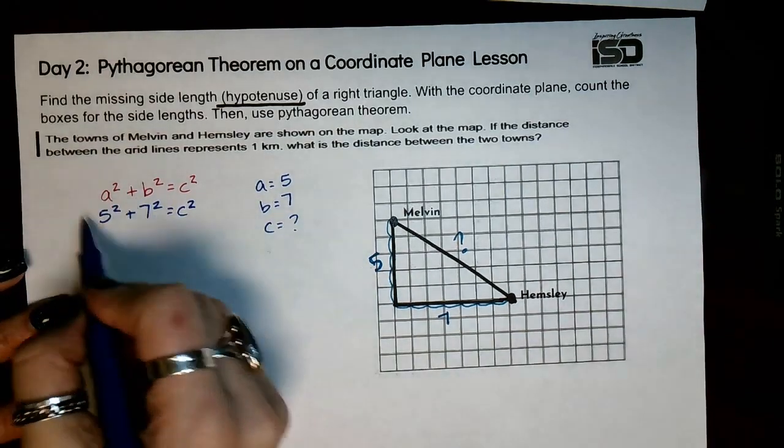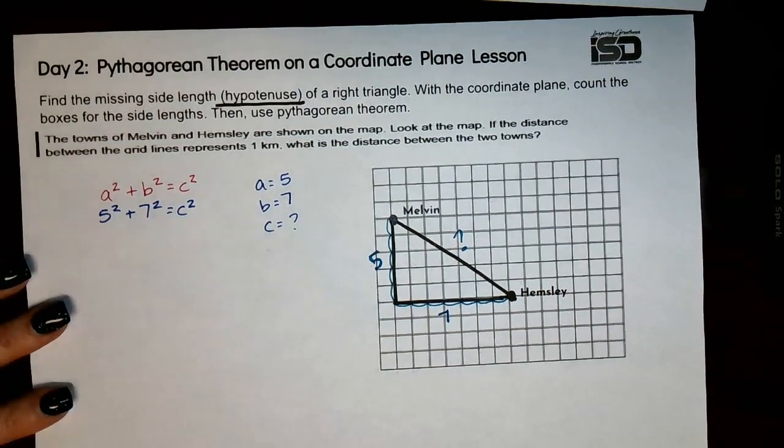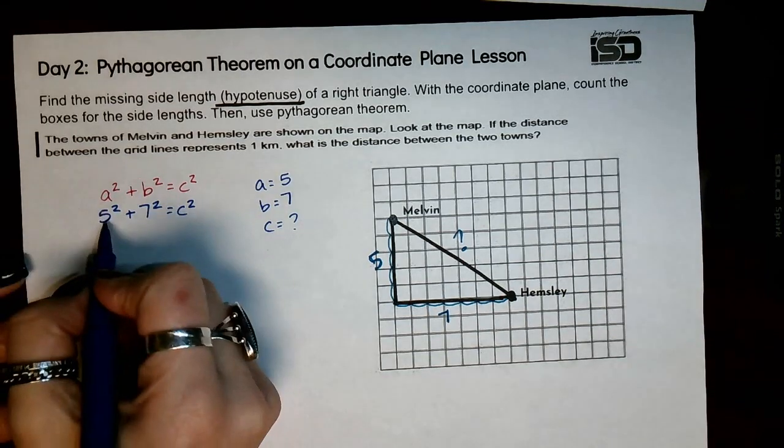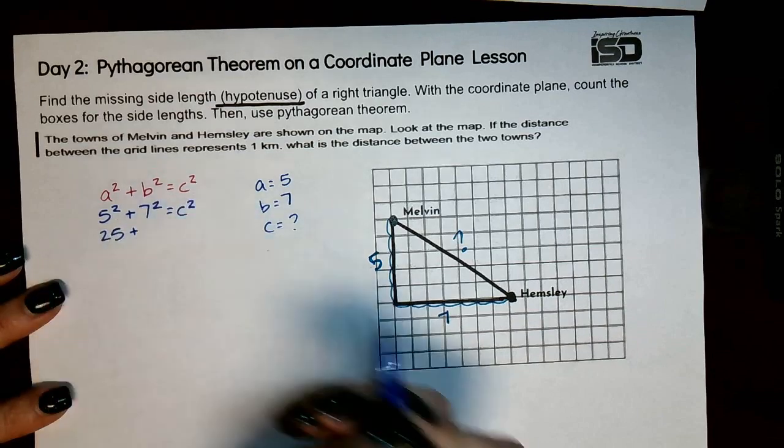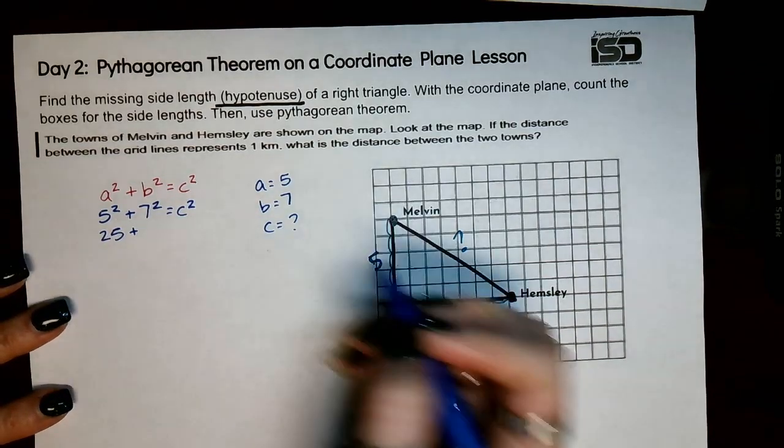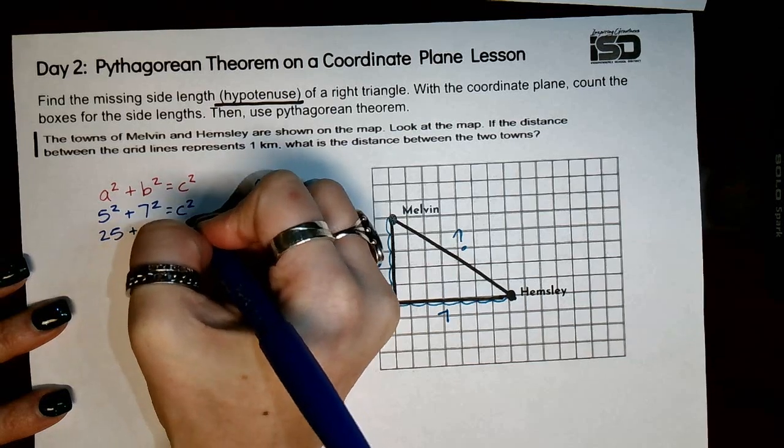Now from here, our next step is to actually go ahead and square these numbers, and you are welcome to use a calculator. So five squared means five times five, which is 25. Seven squared means seven times seven, which is 49, equals c squared.